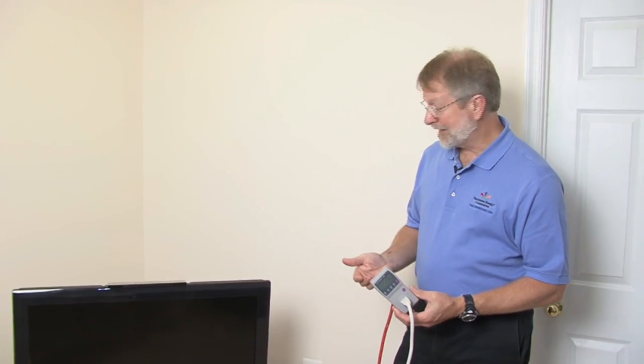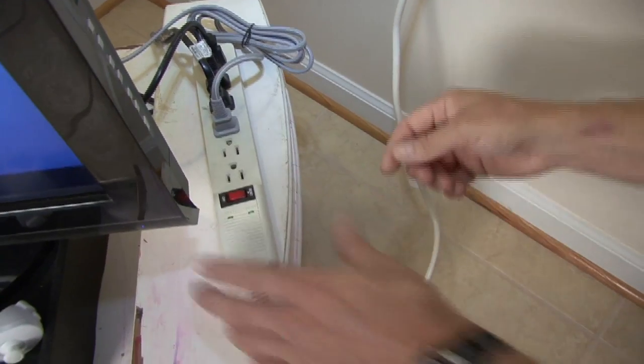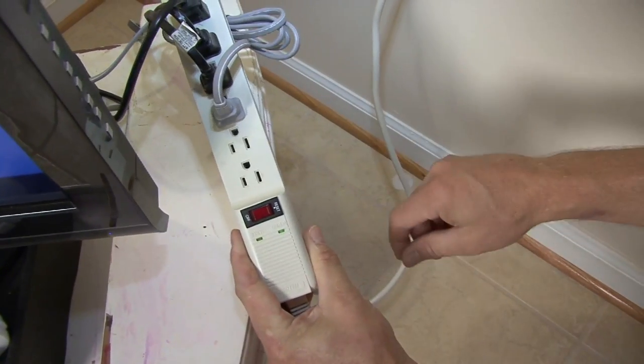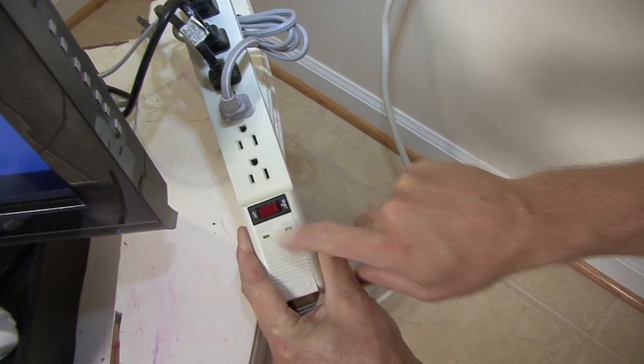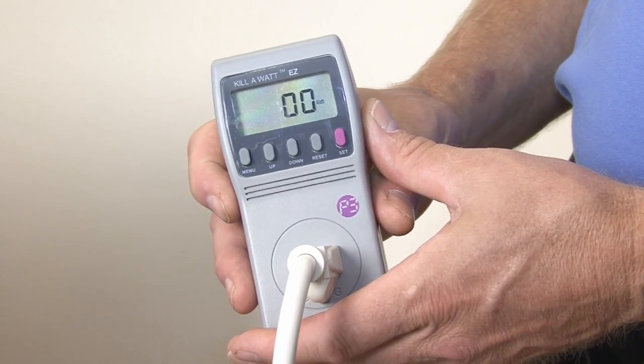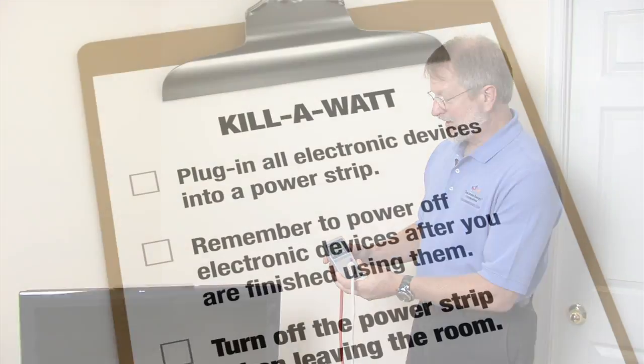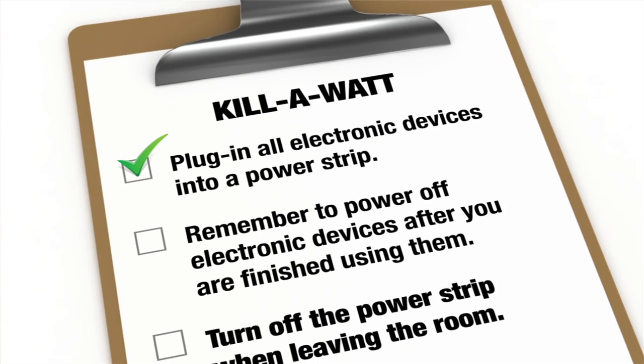How do we combat that? A simple way is to use a plug strip. If we plug all of the devices into a simple plug strip like this, by simply pressing the off button, we switch all of the devices off. And we can see now on our kilowatt meter, energy use has dropped to zero. So we've shut off those phantom loads and we're saving ourselves money.